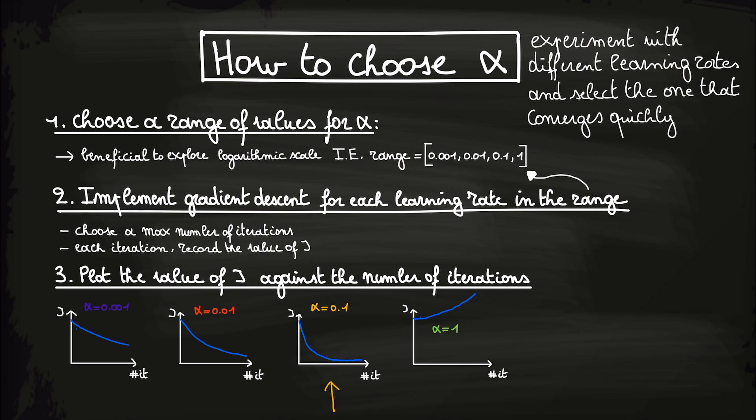And voila! We now see that alpha equals to 0.1 gives us a good value for the learning rate. Keep in mind that this is a heuristic approach, and the optimal learning rate might depend on the specific dataset and problem.